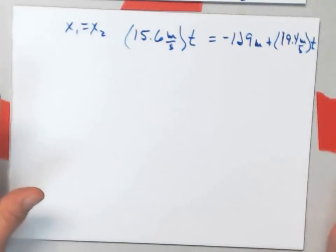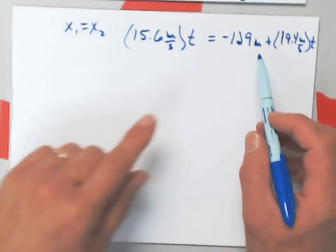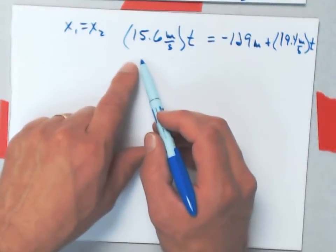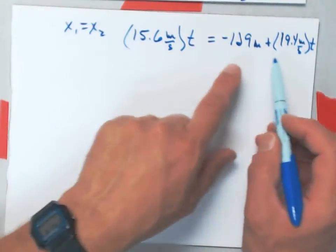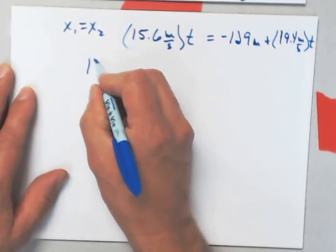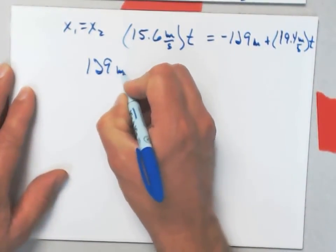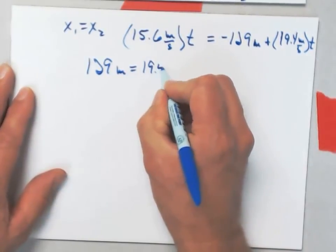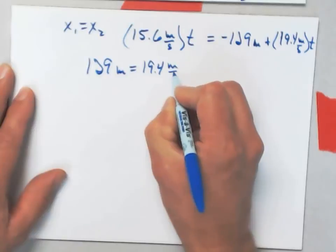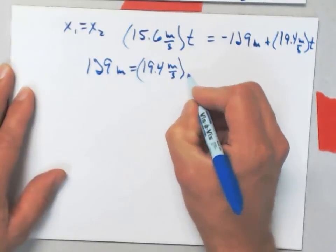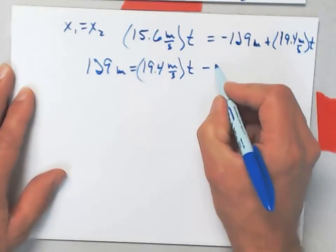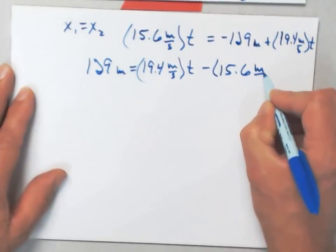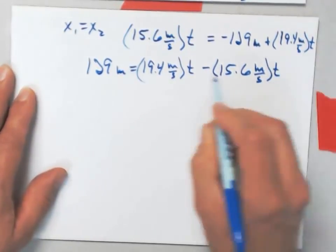Now, I'm going to do probably two algebra steps at once here. I'm going to bring this minus 129 meters across, change its sign. I'll bring this across too. And I'll get 129 meters is equal to 19.4 meters per second times t minus 15.6 meters per second times t.